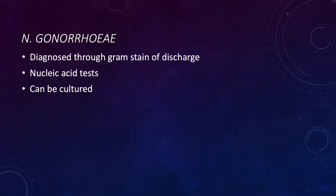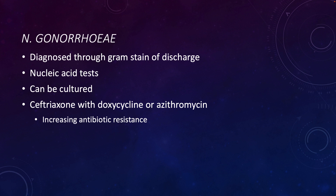Gonorrhea can be diagnosed through a gram stain of discharge, nucleic acid tests, or culture. Treatment generally involves antibiotic therapy with ceftriaxone and combination therapy, but we are seeing increasing antibiotic resistance. There is no vaccine available. Reflect on why — go back and look at the virulence factors, especially those that help with immune evasion, and consider why it might be difficult to generate a vaccine against this bacterium.